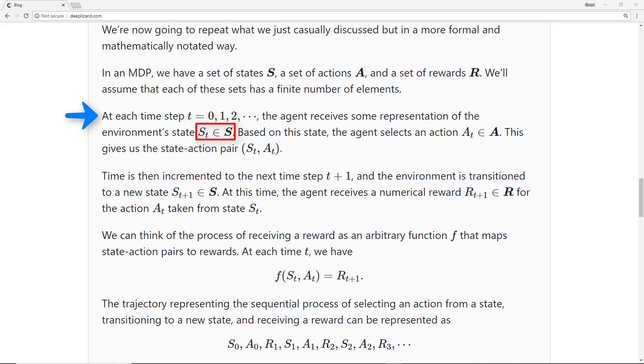Based on this state, the agent selects an action, a_t, and together, this state and this action gives us the state-action pair (s_t, a_t).